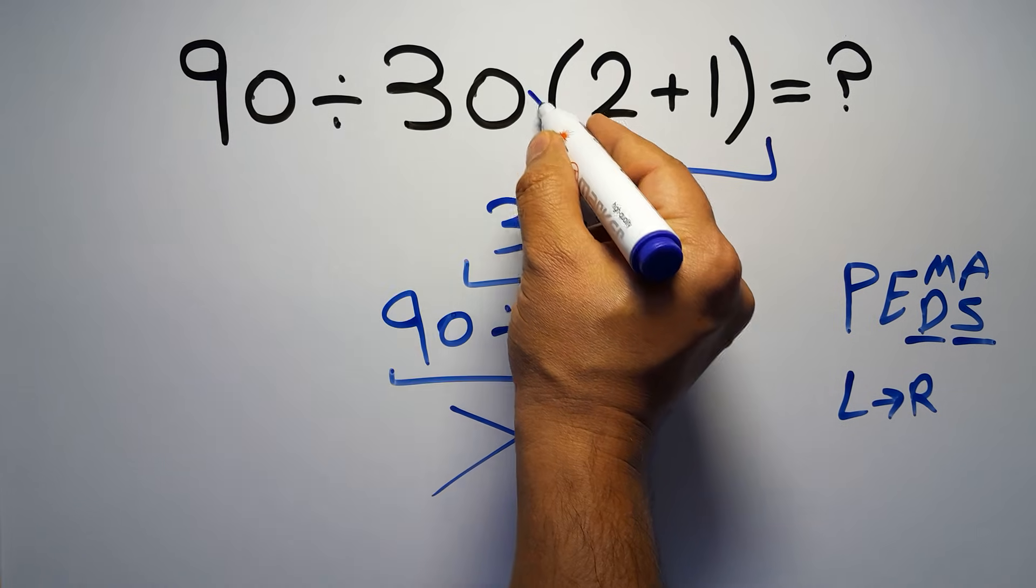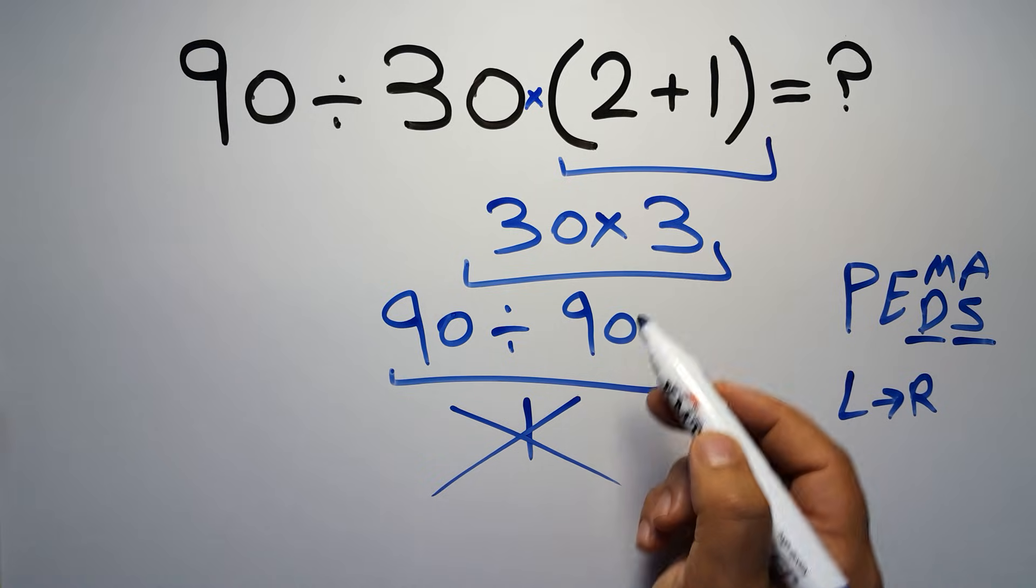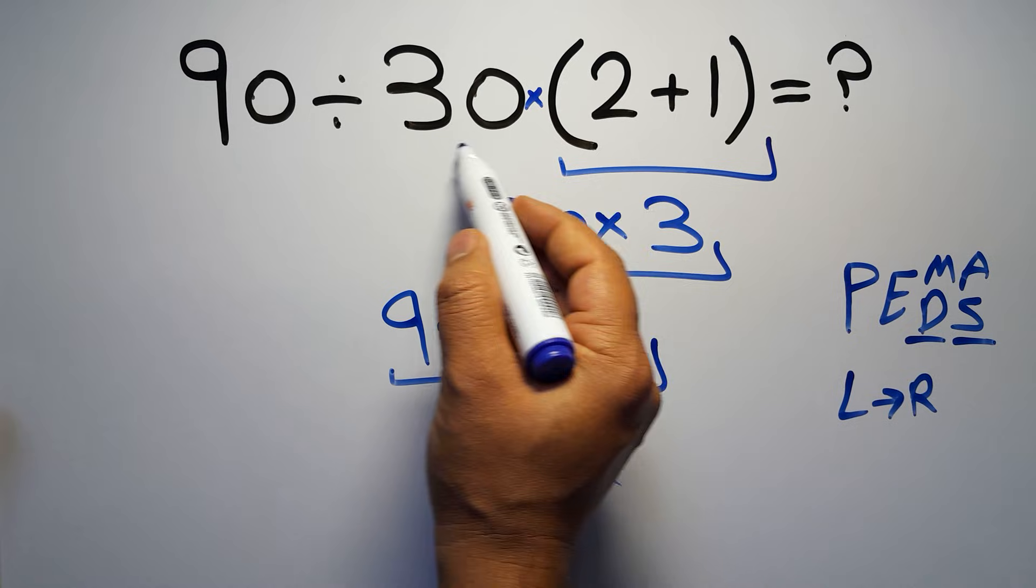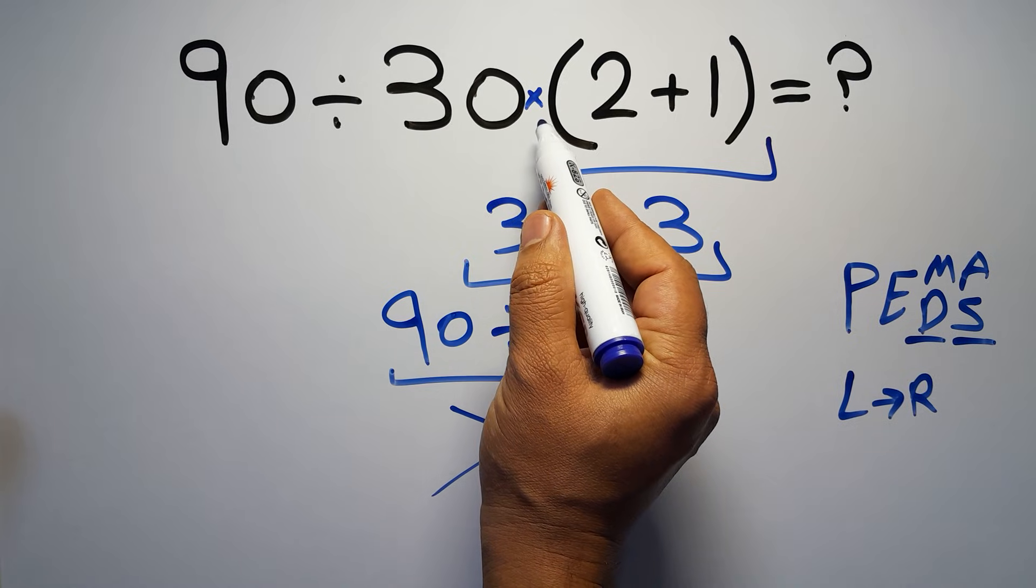In this expression we have one division, one multiplication, and one parentheses. Inside the parentheses we have addition. We have multiplication because in mathematics when a number is placed next to parentheses it means multiplication, and we usually don't write the multiplication sign for brevity.